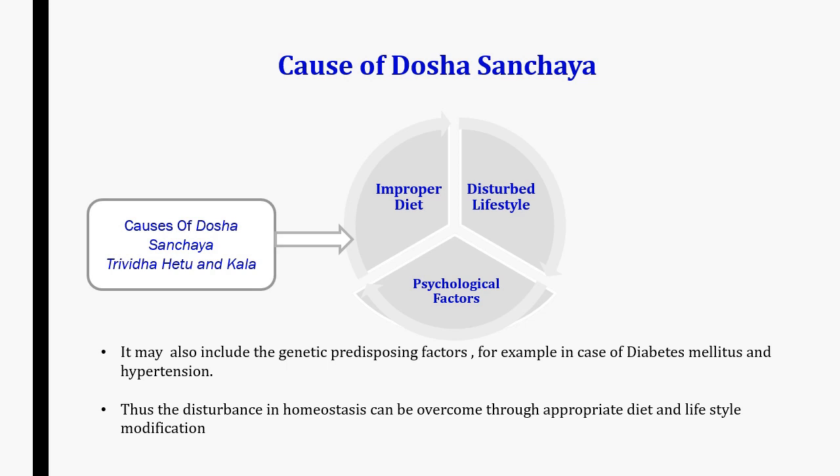The etiology of Sanchay can be either Kalswabhav, meaning natural, or Trividhetu, the three causative factors. These three causative factors are Asatmendriyarsamyoga, i.e. improper use of sensory organs; Pragnyaparath, intellectual error; and Parinam means Kaal, which includes seasonal changes, day-night changes, and changes in food and regime, and may also include genetic predisposing factors. For example, in case of diabetes mellitus, this disturbance can be overcome through a suitable diet and lifestyle alteration.